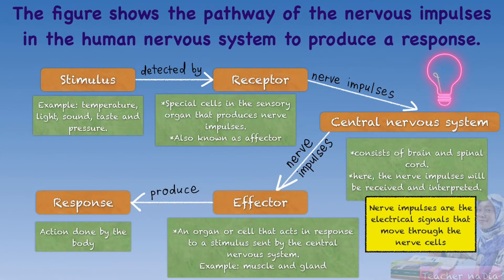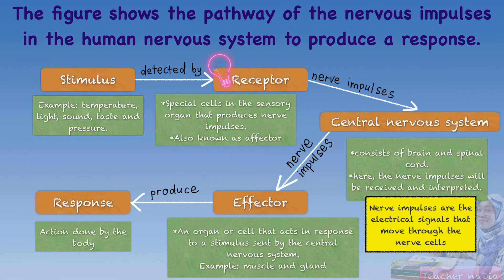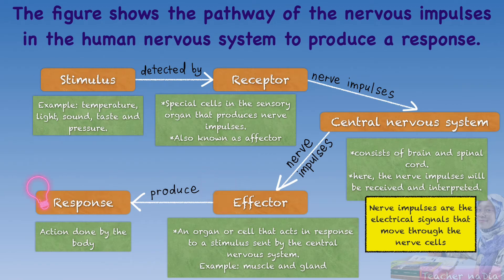The figure shows the pathway of nervous impulses in the human nervous system to produce a response. First, the stimulus is detected by the receptor. The receptor then sends nerve impulses to the central nervous system, which receives and interprets the nerve impulse and sends it to the effector. The effector will then produce a response, which is the action done by the body.